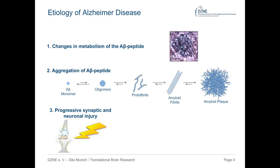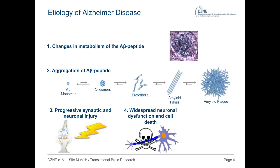The cause and sequence of events leading to Alzheimer's disease are postulated in the amyloid cascade hypothesis. It starts with aberrant metabolism of APP, leading to formation of an amyloid beta peptide prone to aggregate. This aggregation initiates the deadly cascade. The next step involves progressive synaptic and neuronal injuries, followed by widespread neuronal dysfunction and cell death. At the very end of the cascade, we diagnose Alzheimer's dementia.